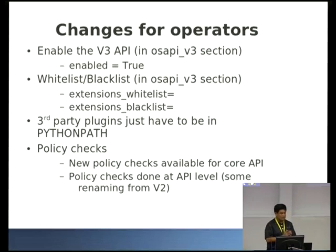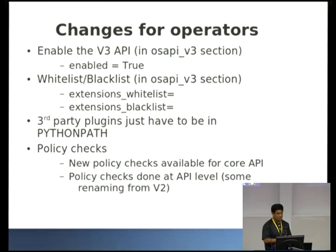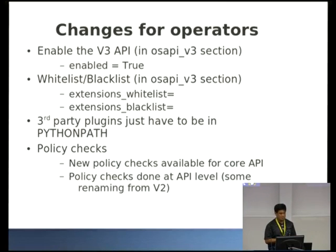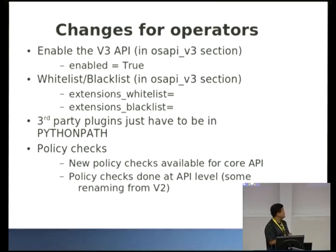If you want to enable the V3 API as an operator, there's an osapi_v3 section in the nova.conf file. It's set off by default at the moment. By the end of Icehouse it'll be on by default, and we should also have a flag to turn the V2 API off by then, so you can decide whether to run both or just one. There are extensions whitelist and blacklist flags, and you can install your third-party plugins wherever you want.